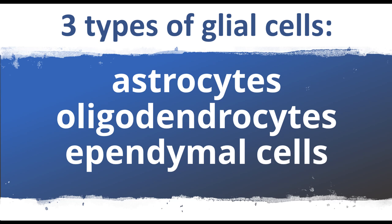Gliomas formed from astrocytes are called astrocytomas. Astrocytes regulate electrical impulses in the brain. Astrocytoma is the most common form of glioma.